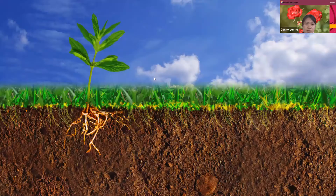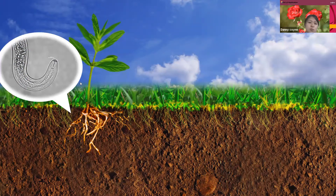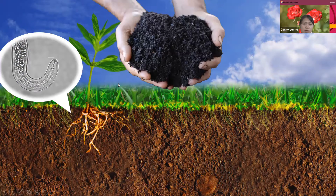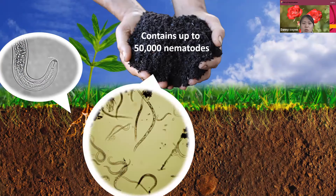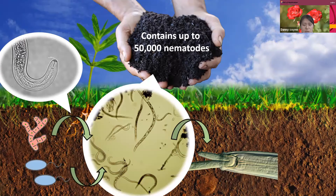Let's focus on nematodes underneath the ground. You can find plant parasitic nematodes in soil, but if you take a handful of soil, you can find not only plant parasitic nematodes but other kinds as well. This soil can contain up to 50,000 nematodes — a huge number. Some nematodes feed on fungi, bacteria, or even both, and some nematodes even feed on other nematodes, so they are predators.